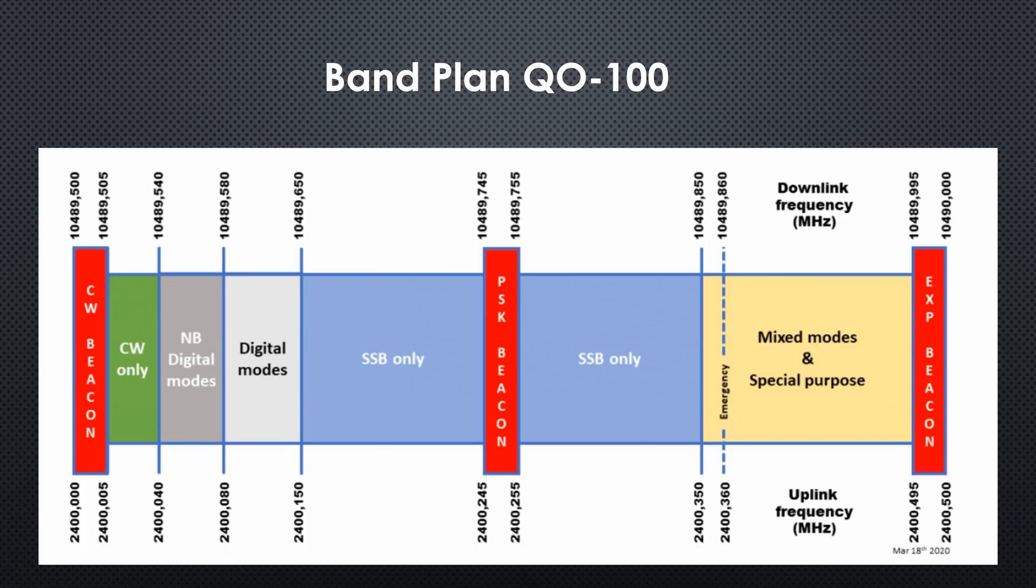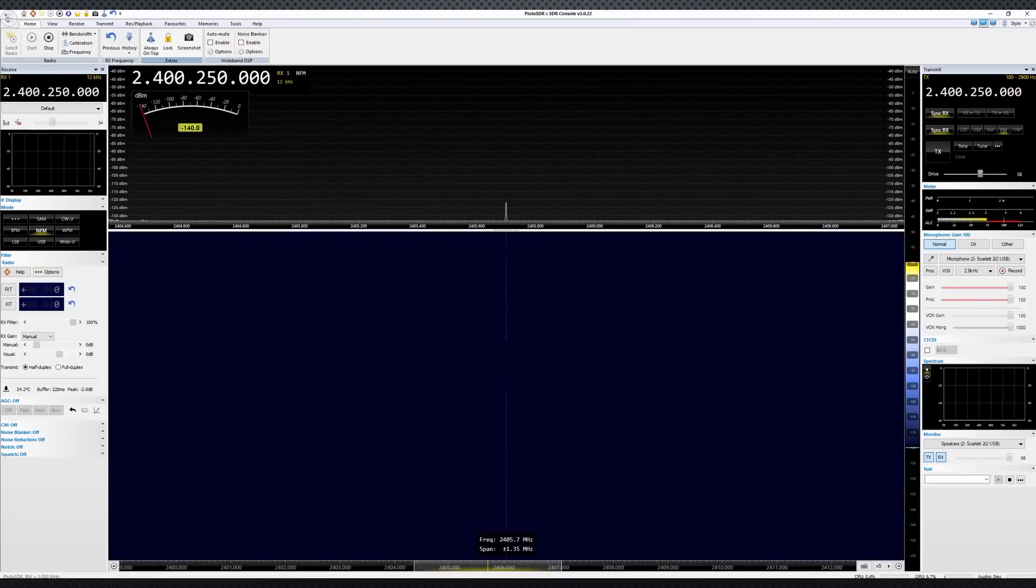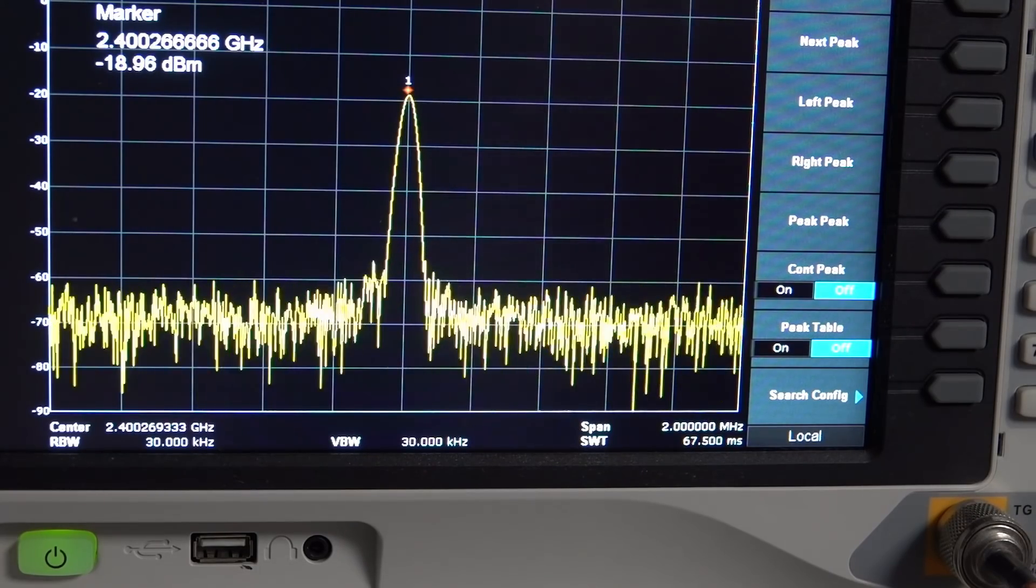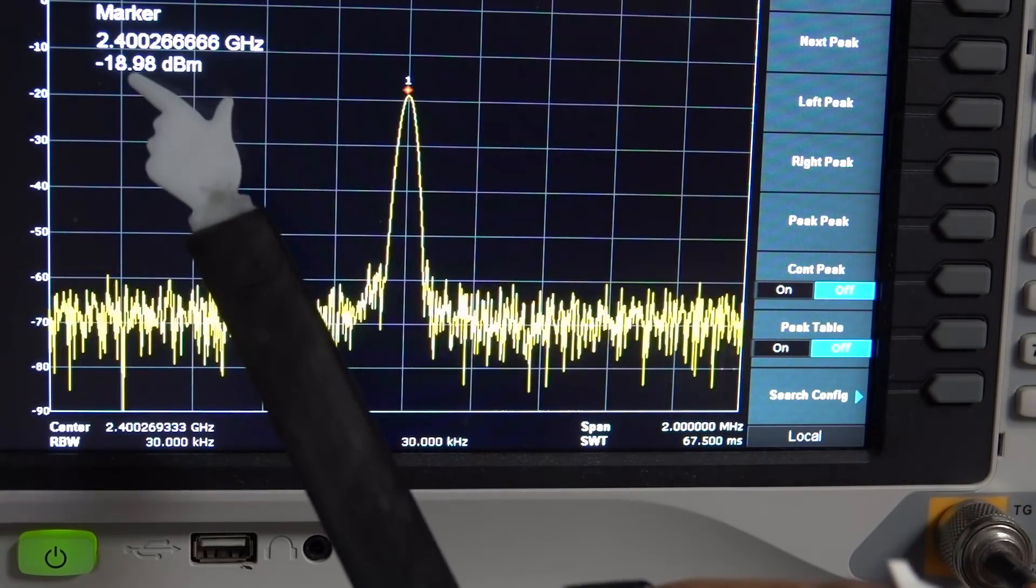To find the exact frequency for our purpose, we consult the bandplan of the Q0100. The uplink is on these frequencies. So we choose the middle for the test, 2,4,250. I use the SDR console software to create a tone, which is the name used by RF engineers for a single frequency. Here I can adjust the power.